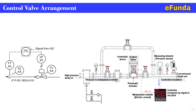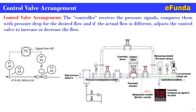For understanding this arrangement, one can refer to the typical valve arrangement where the controller receives the pressure signal, compares it with a pressure drop for the desired flow, and if the actual flow is different, adjusts the control valve to increase or decrease the flow. This is how the installation is done, with the valve installed in a line from which high-pressure steam enters.